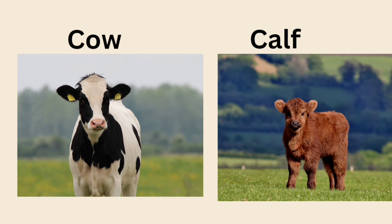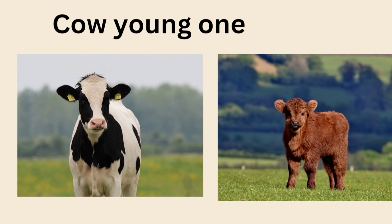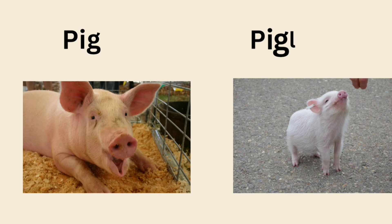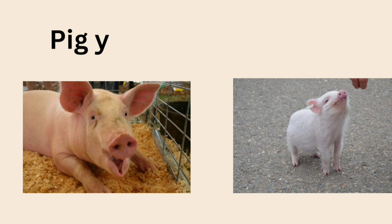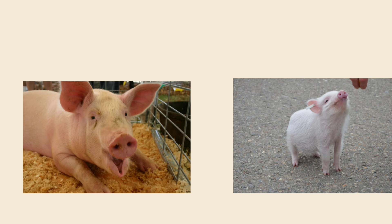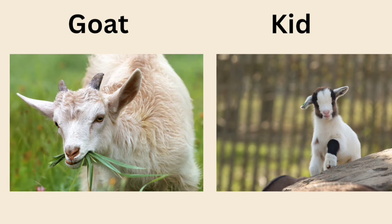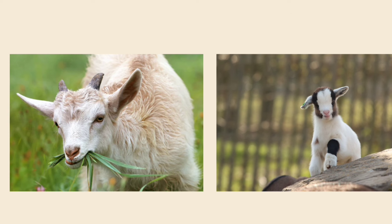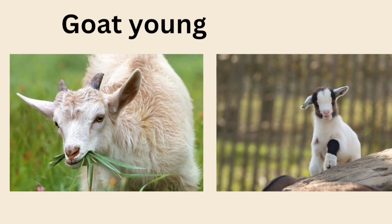Cow — young one is calf. Pig — young one is piglet. Goat — young one is kid.